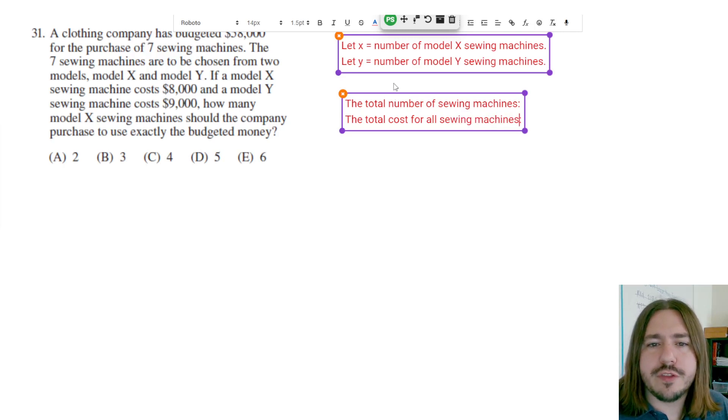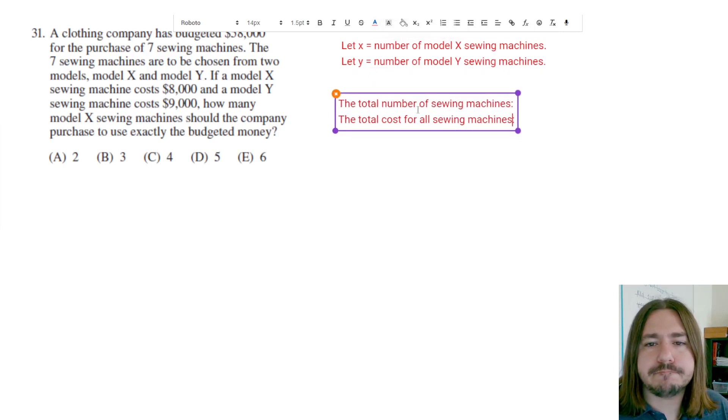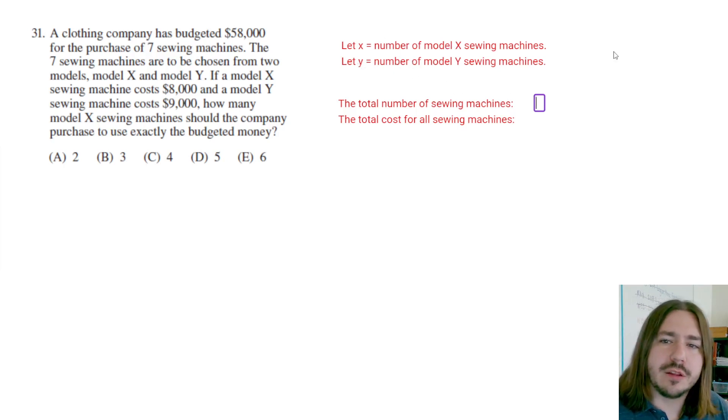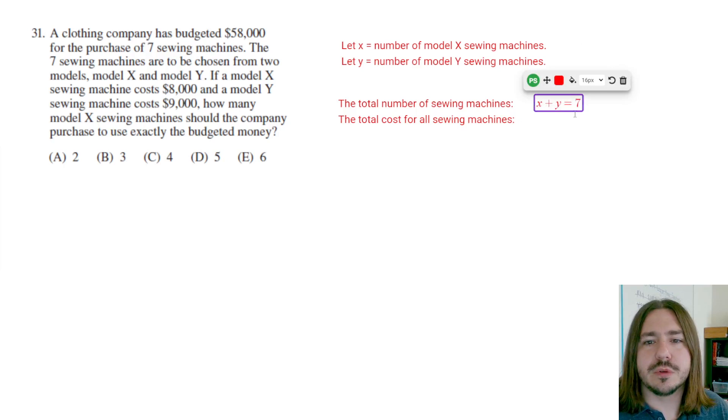So each one of these statements is going to have its own equation. For the total number of sewing machines, we know that we have a total of seven sewing machines, and since X represents the number of Model X sewing machines, we can say that X plus Y has got to be seven, right? The number of X's plus the number of Y should be a total of seven.